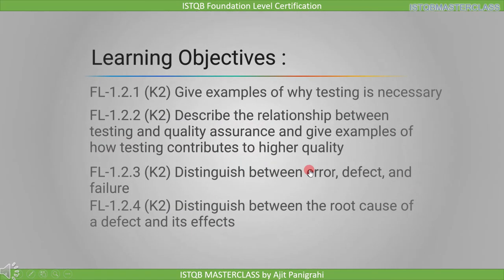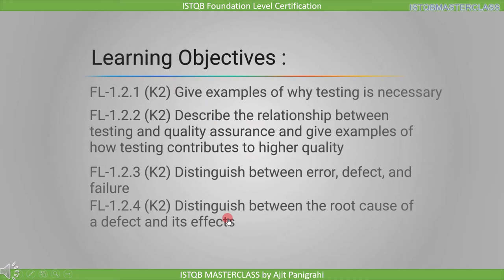Before we end this lecture, let's have a look at the different topics we are going to cover under this section. The first topic is giving an example of why testing is necessary. Next is describing the relationship between testing and quality assurance, and giving examples of how testing contributes to higher quality. Next is distinguishing between error, defect, and failure. And the last one is distinguishing between the root cause of a defect and its effect. All these topics are marked as K2, meaning we have to understand them in order to answer questions on them.